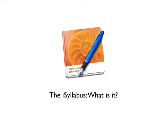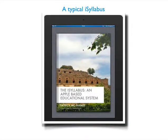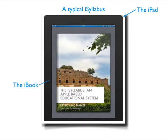The i syllabus — what exactly is it? Well, let's look and see. This is what I would call a typical i syllabus. The first thing you should notice is that it's on an iPad — it's to be read, to be consumed on an iPad. It is also formatted as an iBooks Author book. The i syllabus is an Apple-based educational system. To go from one page to the next, you simply swipe it.